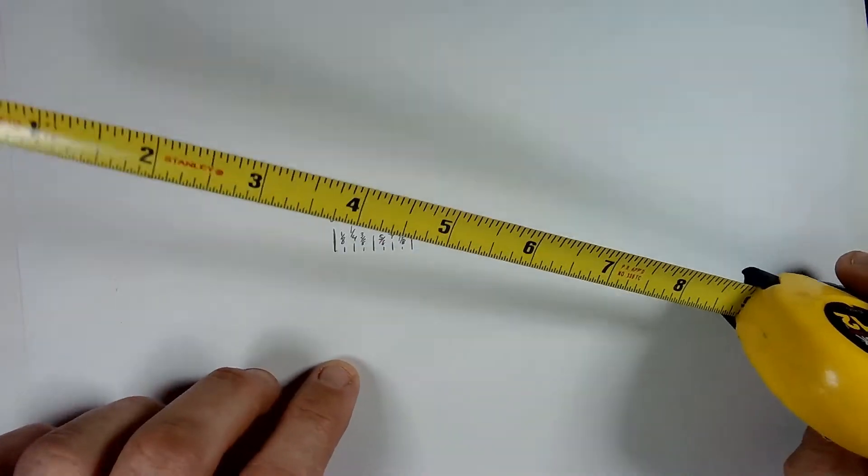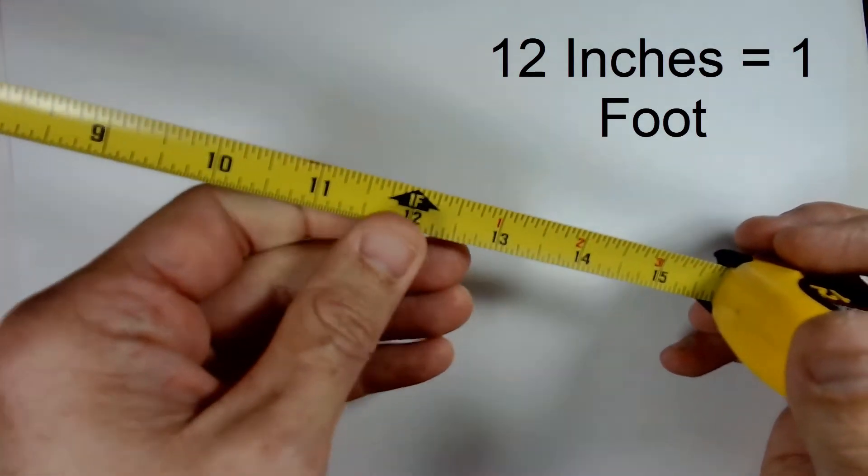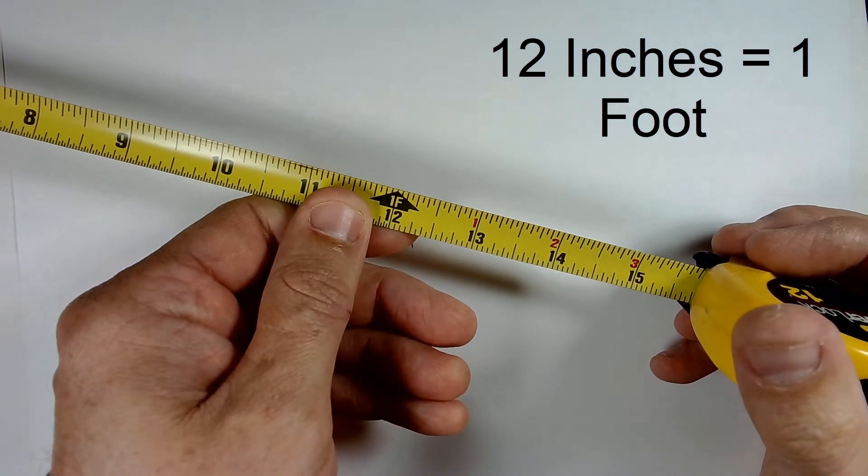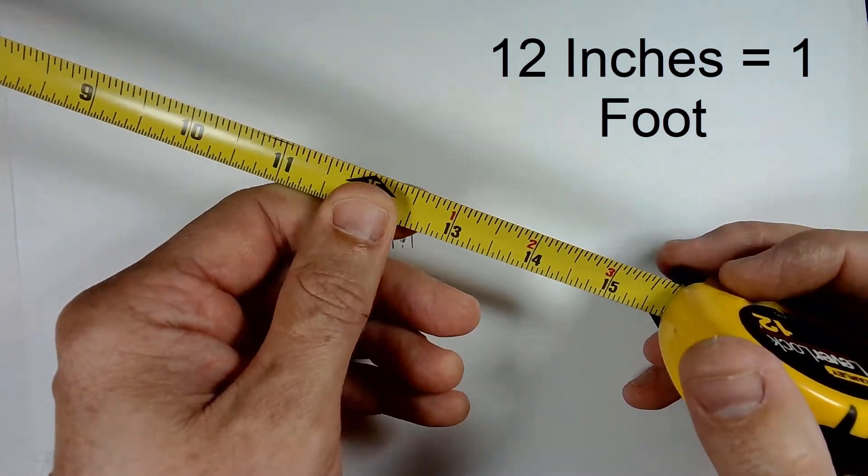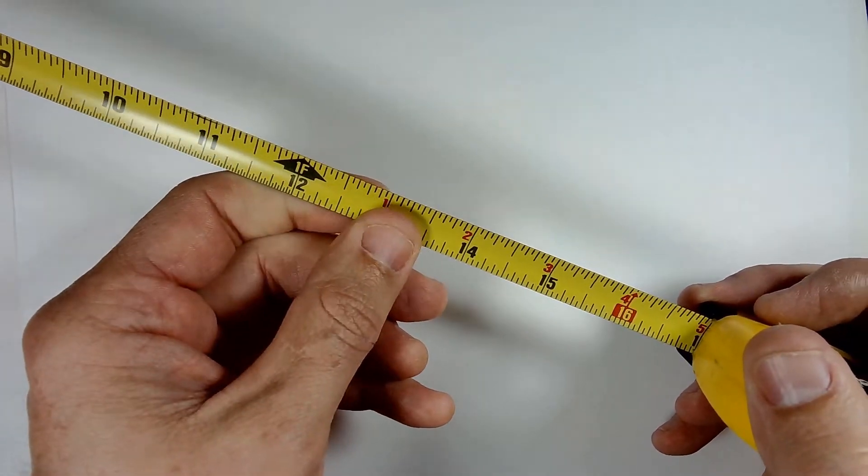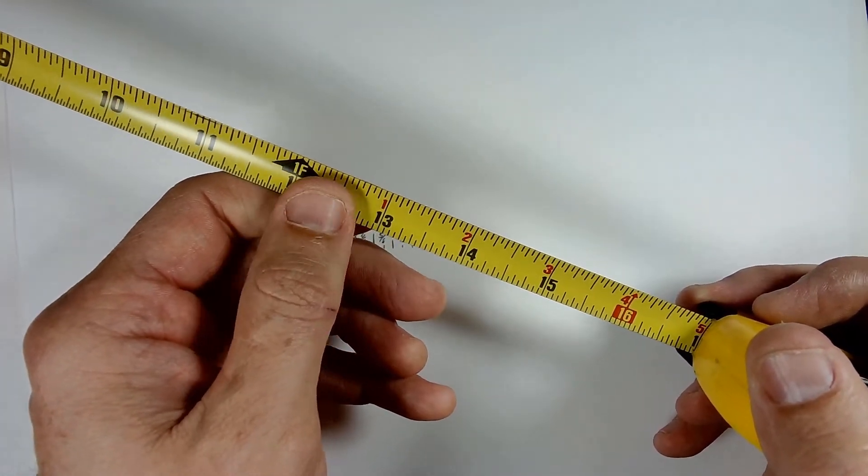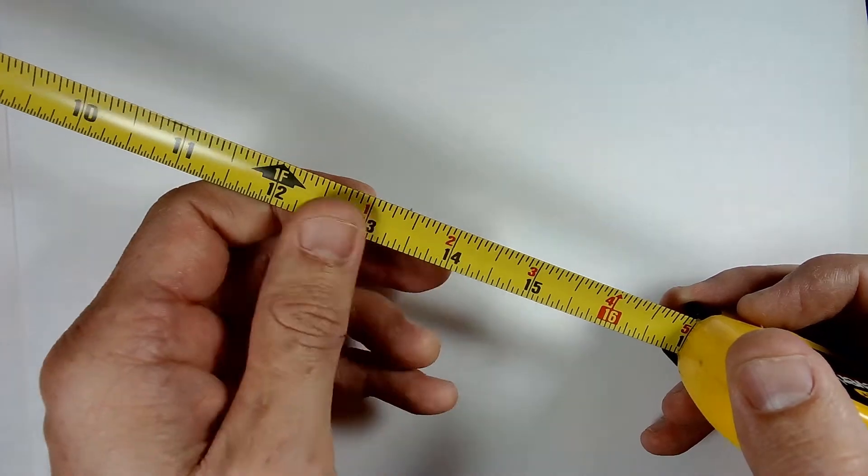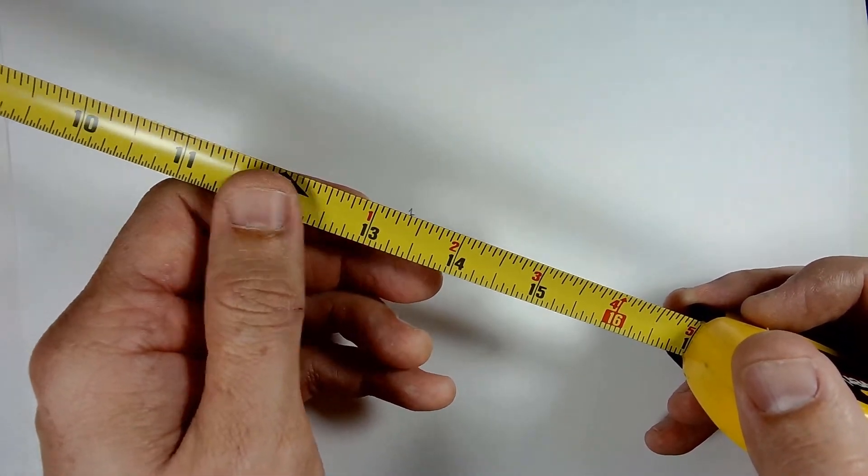So also along with that, we have foot marks that are placed. After you get to the foot mark, it begins to give you another inch, two, three, so on. So it's one foot, one inch.